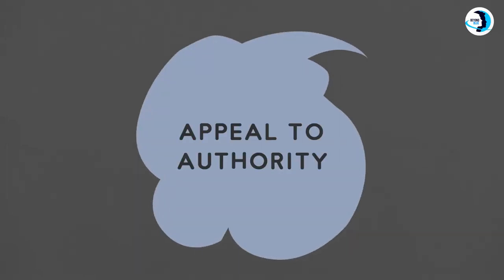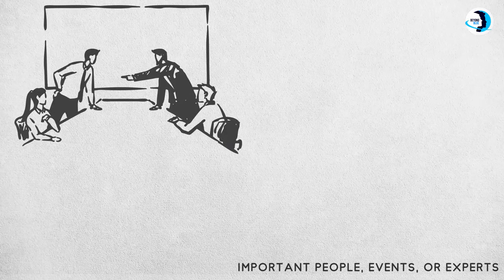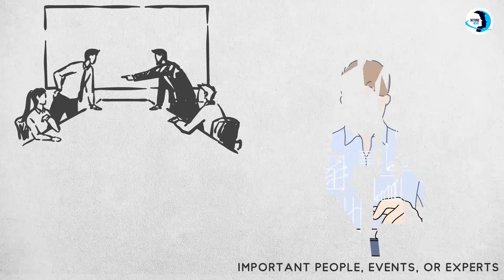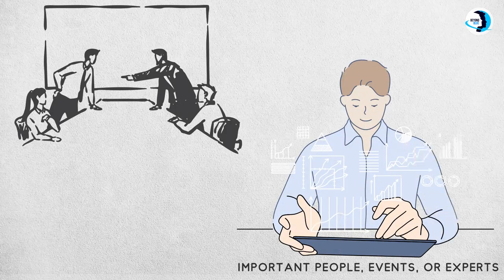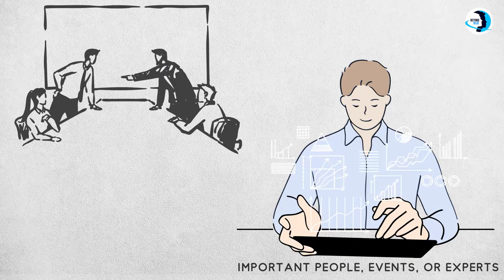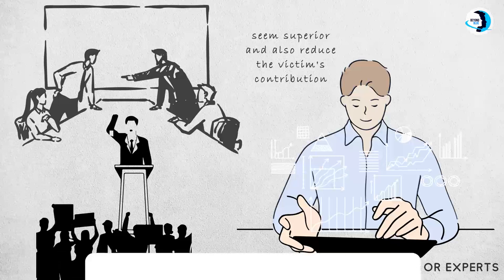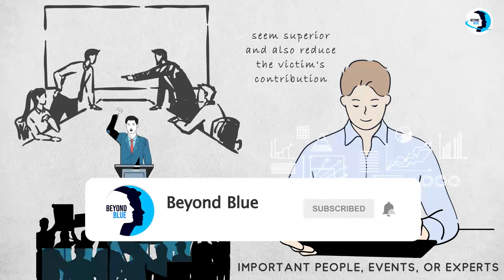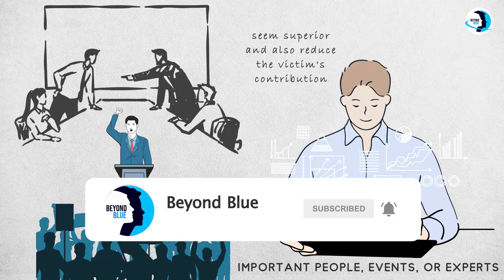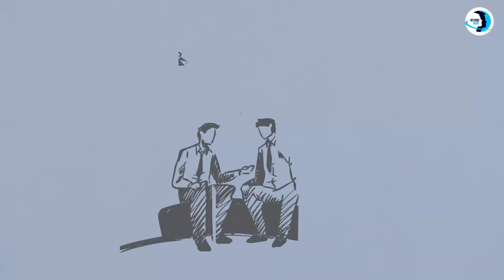Appeal to Authority. This is an argument technique where a manipulator uses important people, events, or experts to make their arguments seem more convincing. Sometimes they do a lot of research about a subject and then use it in an argument to appear more knowledgeable and convincing. The manipulator uses this technique to make themselves seem superior and also reduce the victim's contribution. They might quote a former or present president, heads of state, or governor — for example, claiming the president drinks coffee at night.